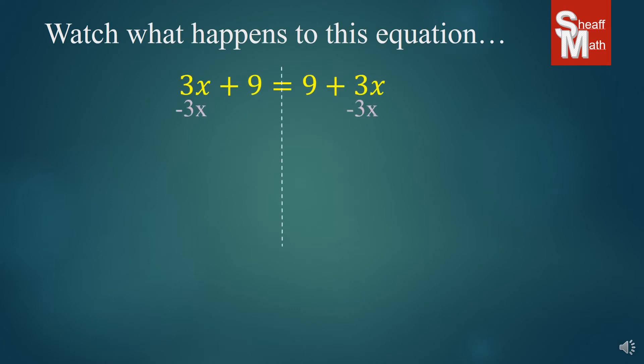If I were to subtract my 3x from the left and right, my x's go away, but I end up with 9 equals 9. Now, this actually makes sense. 9 does equal 9, but what's with the x's? Why aren't the x's there anymore?